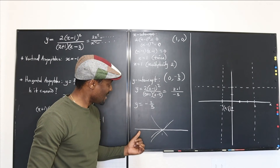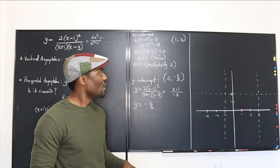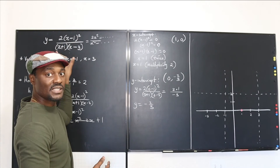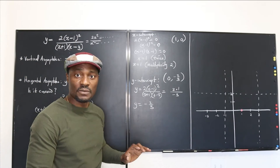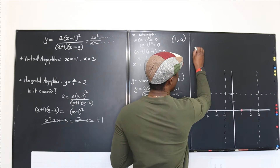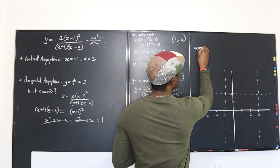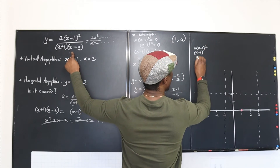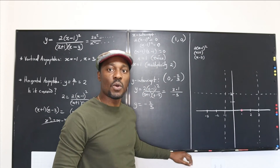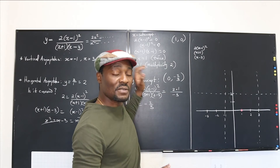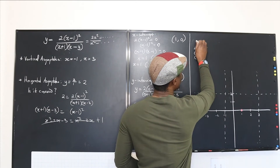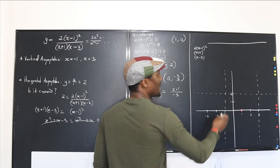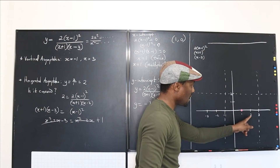To be 100% certain about the shape, let's do a sign chart. I'll write out each component of the rational function: 2 times (x minus 1) squared on top, and (x plus 1) and (x minus 3) on the bottom. The critical values we have are negative 1, 1, and 3, which divide the number line into four regions.